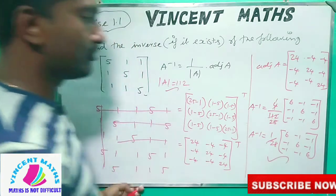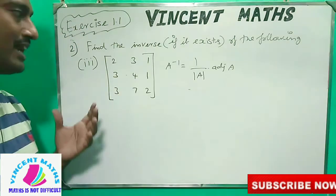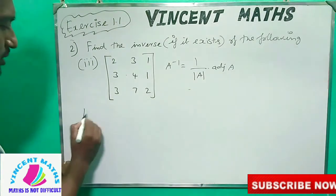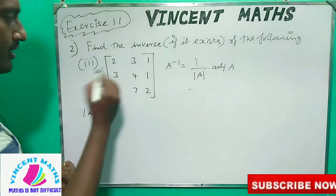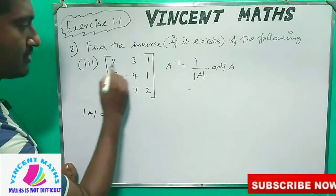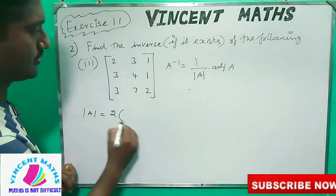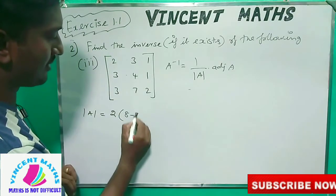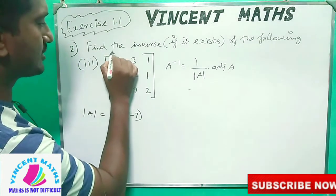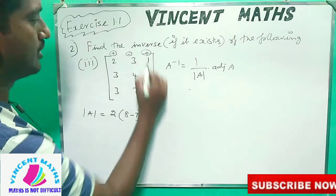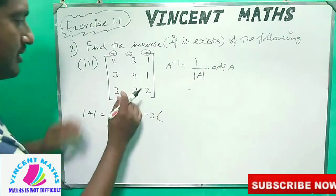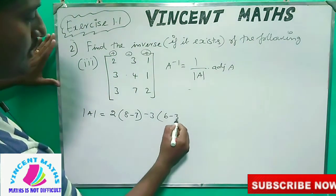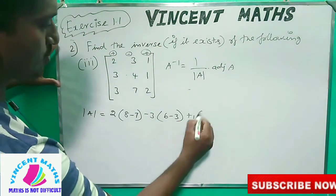Now if we do another 3x3 matrix, we first find the determinant of A. We expand along the first row with plus, minus, plus. The matrix has entries: 4, 2, 8; minus 7 and related values. We want to expand this way. This gives 6, minus 3.